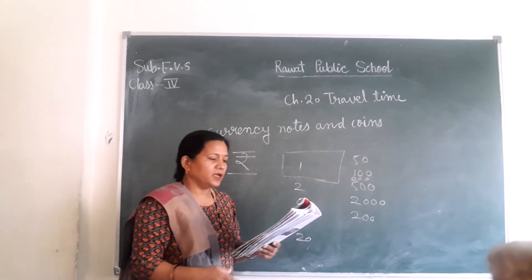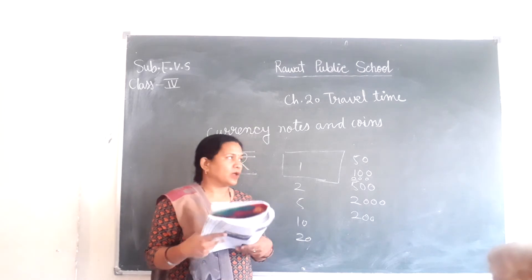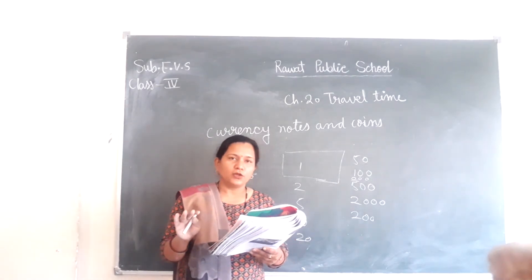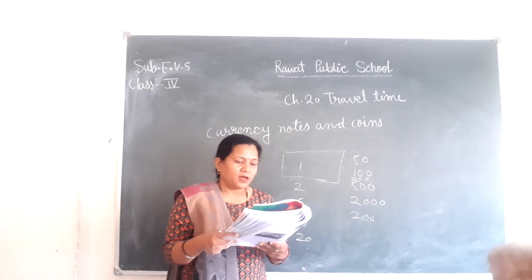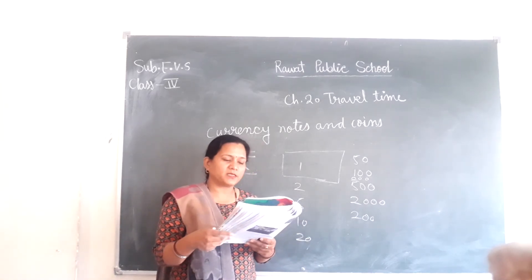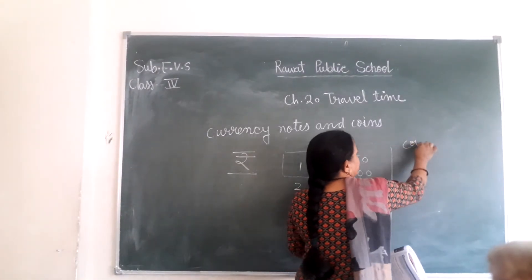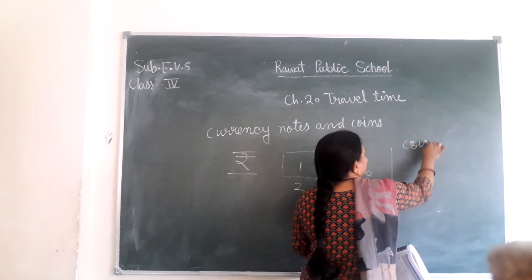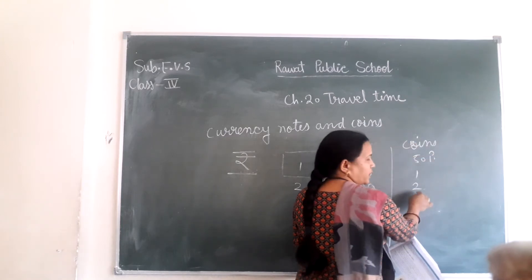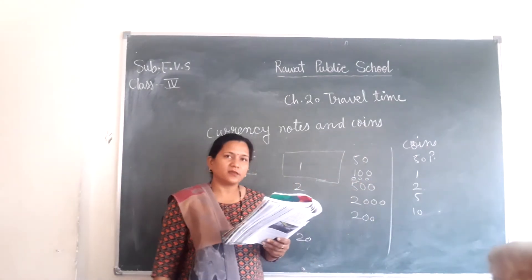In India, currency notes are of denominations: 1, 2, 5, 10, 20, 50, 100, 200, and 500 rupees. Coins currently running in India are of denominations: 50 paise, 1 rupee, 2 rupees, 5 rupees, and 10 rupees.